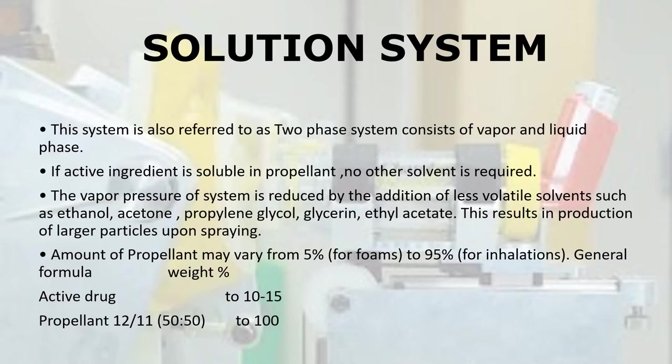The Solution system is a two-phase system consisting of vapor and liquid phases. If the active ingredient is soluble in the propellant, no other solvent is required. The vapor pressure of the system is reduced by addition of less volatile solvents such as ethanol, acetone, propylene glycol, glycerine, or ethyl acetate, which results in production of larger particles upon spraying.